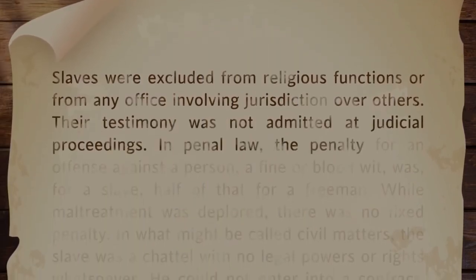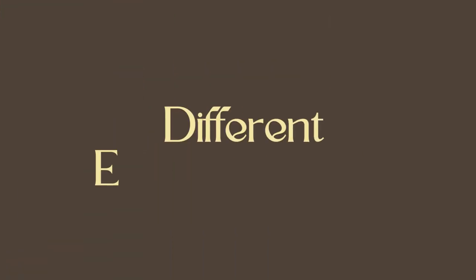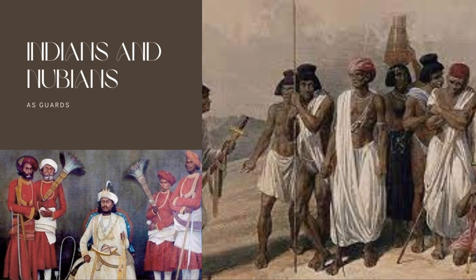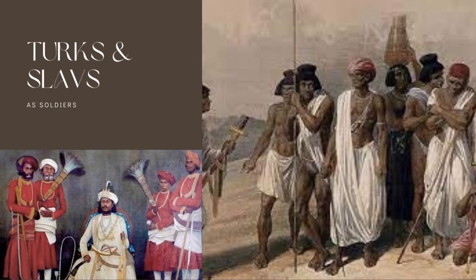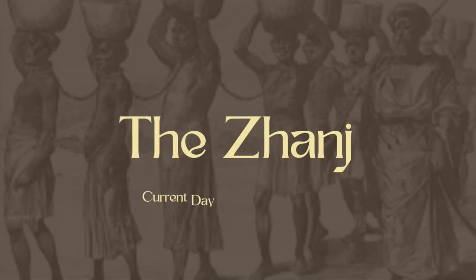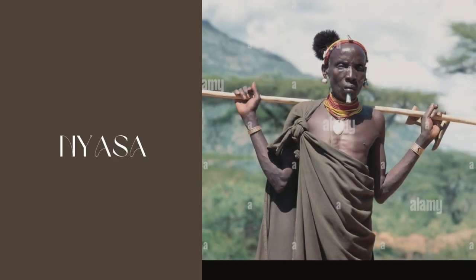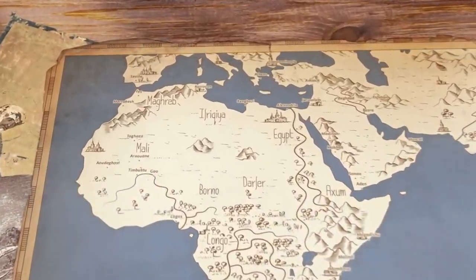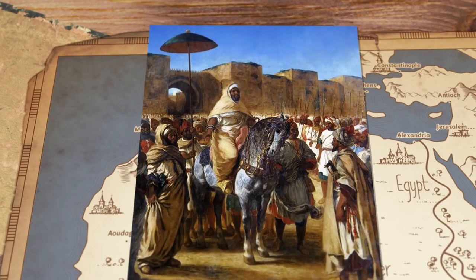Many races were enslaved, not just people of African descent. According to Ibn Butlan's writings, the Indians and Nubians were taken as guards, the Zanj as servants, while the Turks and Slavs became soldiers. The Zanj refers to the Bantu people living along the coast of Kenya and Tanzania, including the Mijikenda, Taita, Kikuyu, Kamba, and Swahili. Groups taken from Tanzania and Mozambique and Malawi include the Makonde, Makua, Nyasa, Yao, and Zaramo.